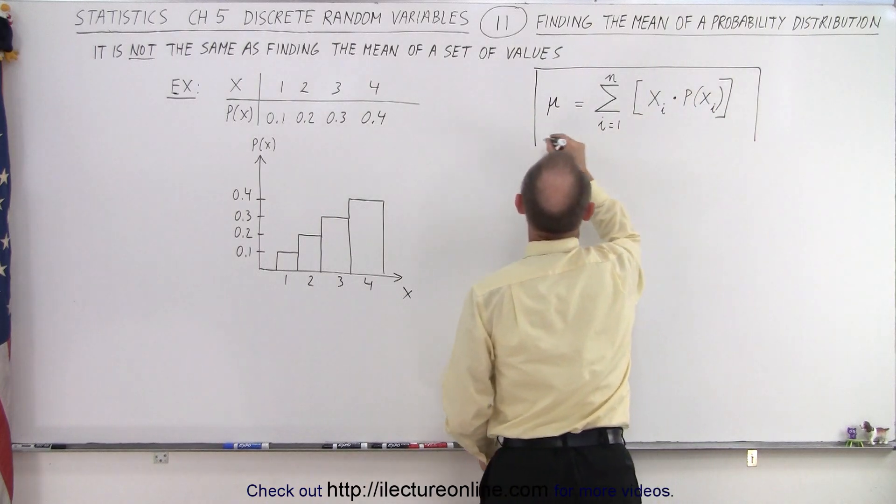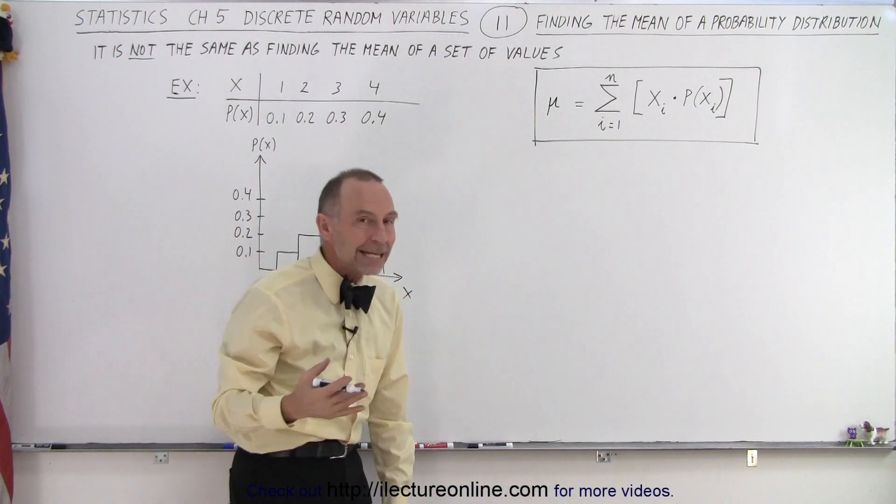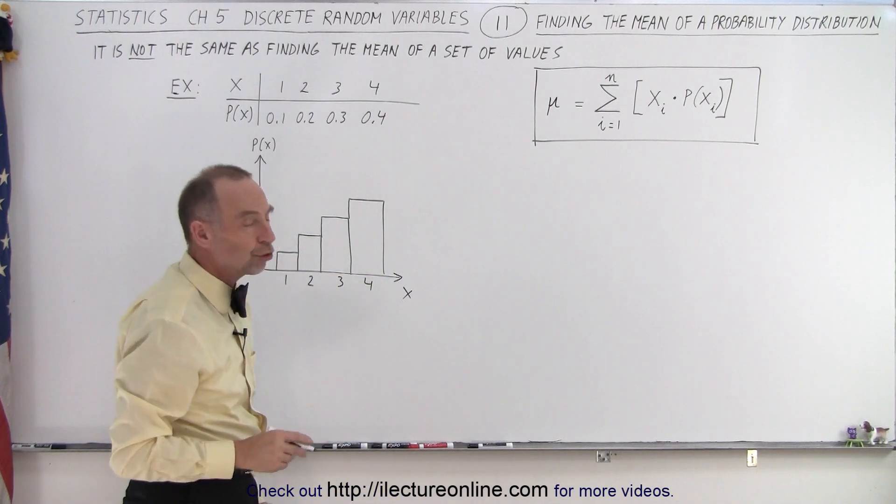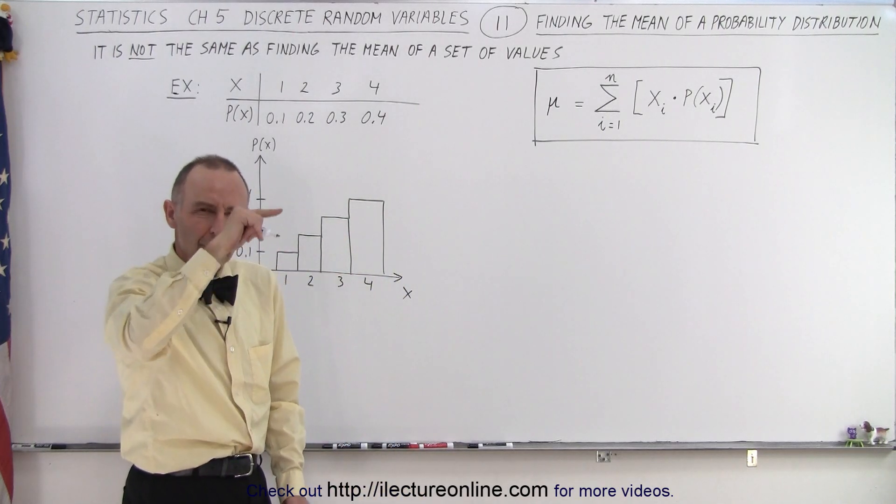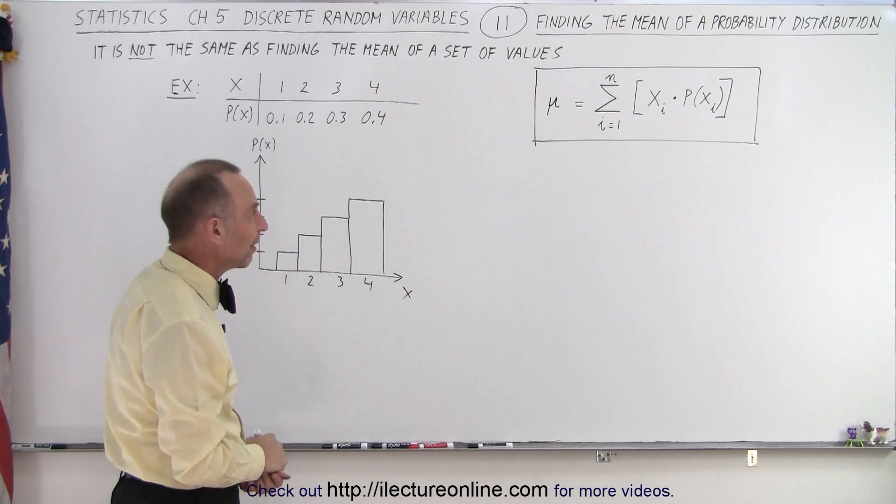Notice we use the variable mu, the Greek letter mu, to indicate that this is the mean of a probability distribution. Otherwise we'd use an x with a bar on top to say this is the average or mean value of all the possible values for x.